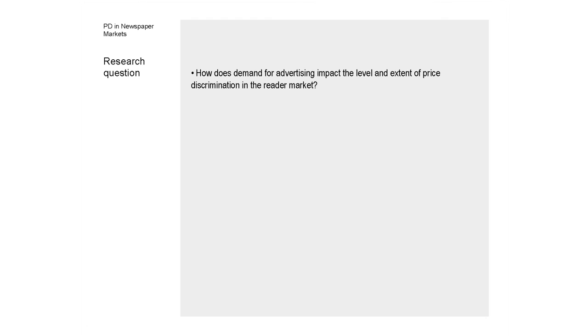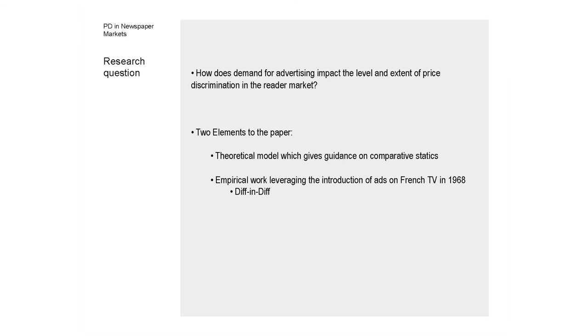The discussant notes that the research question — how does demand for advertising impact the level and extent of price discrimination in the reader market — is a great IO research question. It is embarrassing how little we know empirically about how price discrimination works, in particular with respect to basic comparative statics, given how much time is spent on mechanism design and IO theory. Well-founded reduced-form results on price discrimination, whether in a two-sided market or in competition, represent a significant contribution to the IO literature.